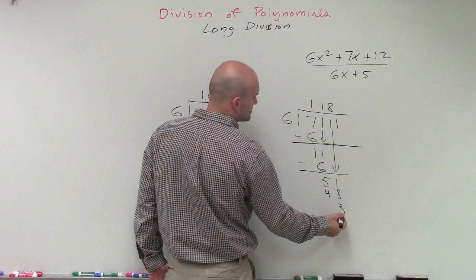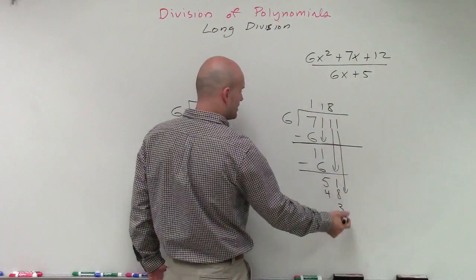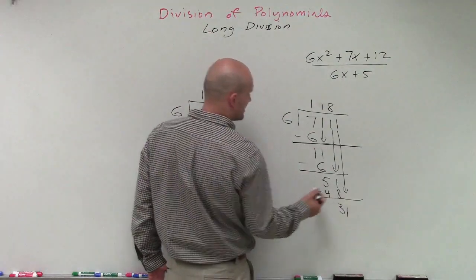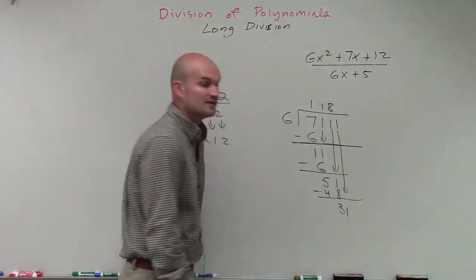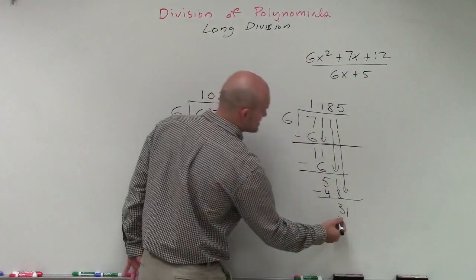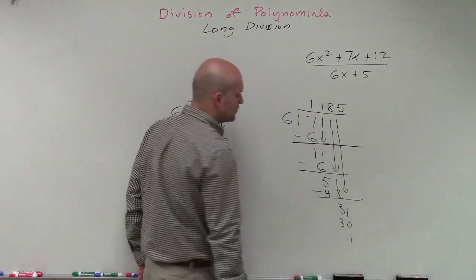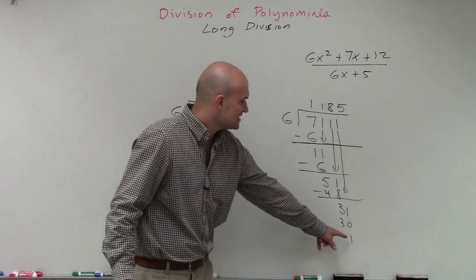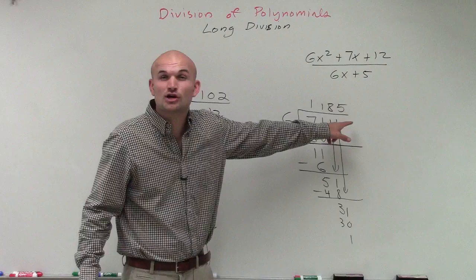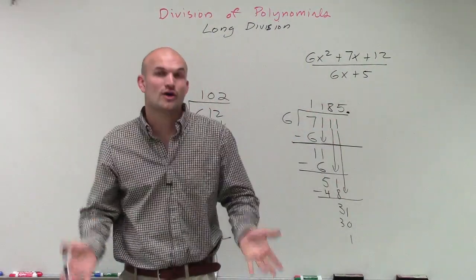And then we subtract those. 6 does not divide into 3, so we bring down the next one. So I've got to subtract those, which is 31. You can say that 6 divides into 31 five times. 5 times 6 is 30. And then we subtract, and we get 1. Now we see that 6 does not divide into 1, and we don't have any other terms that we can bring down. So therefore, that's going to be the end of our number.